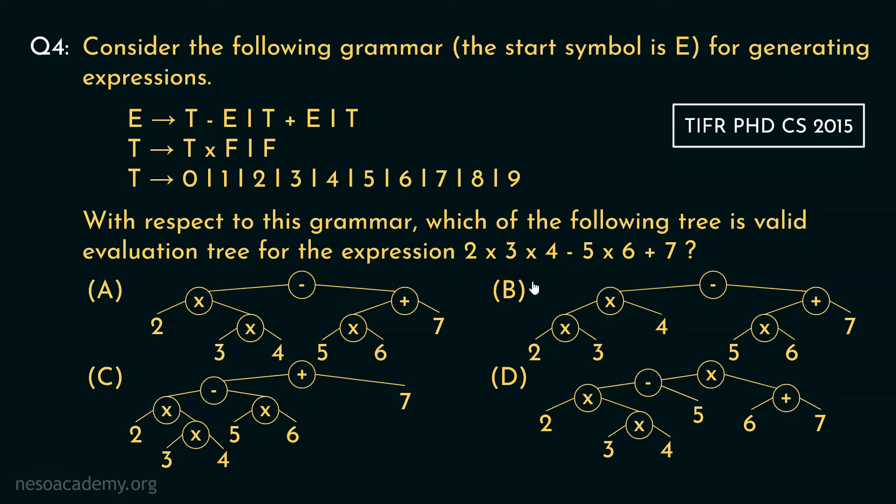Now observe. The start symbol E can be rewritten as T minus E or T plus E or just T. Now in these two production rules the non-terminal E is reoccurring as the rightmost non-terminal in the right hand side. Clearly these two are right recursive.